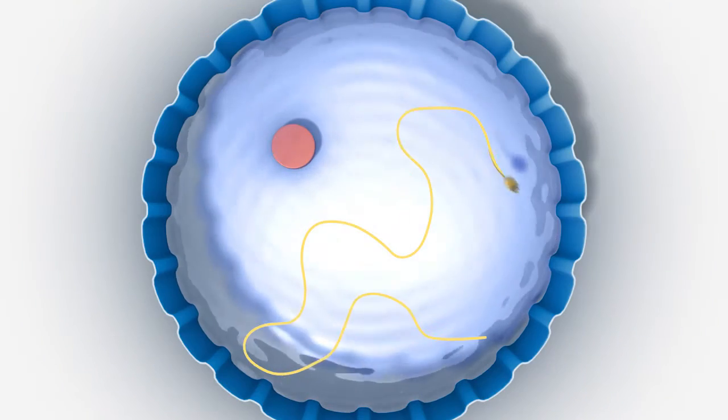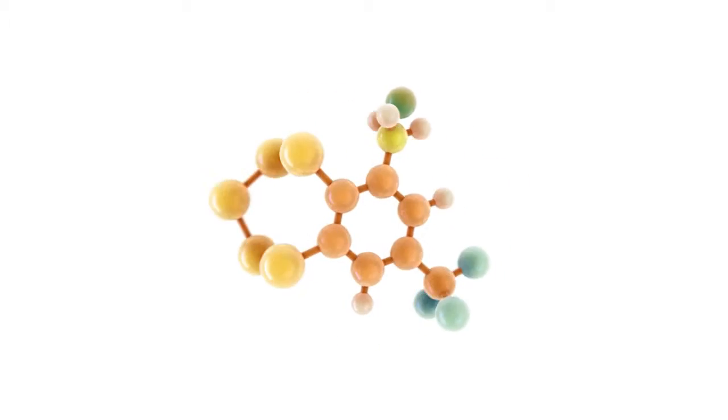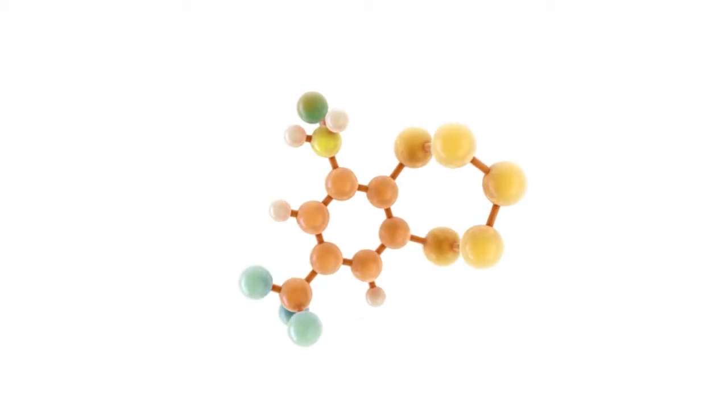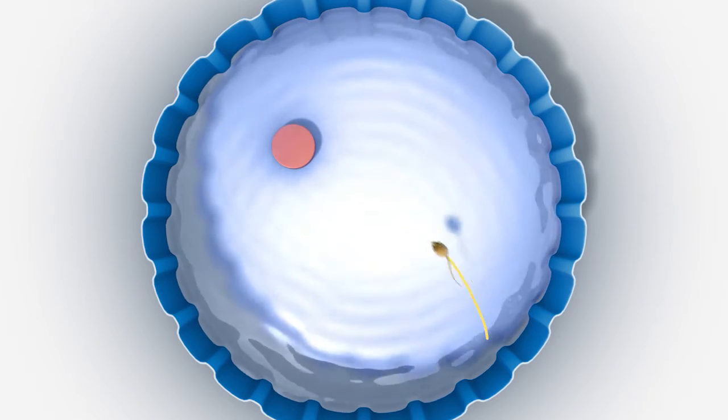But a mouse with Alzheimer's disease will not learn where the new platform is. When we give our STEP inhibitor to these Alzheimer mice several hours before each learning session, then the Alzheimer mice learn just as well as the wild-type mice and swim directly to the platform.